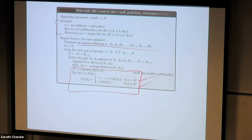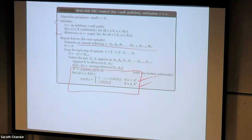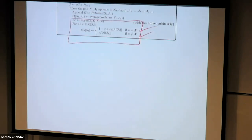We discussed policy improvement theorem only for deterministic policies. Now, what if my policies are soft? If I'm not becoming greedy with respect to the policy anymore when I'm improving — I'm using epsilon-greedy — the question we should first answer is: if I construct an epsilon-greedy policy instead of a greedy policy with respect to the current value function, does that guarantee policy improvement?